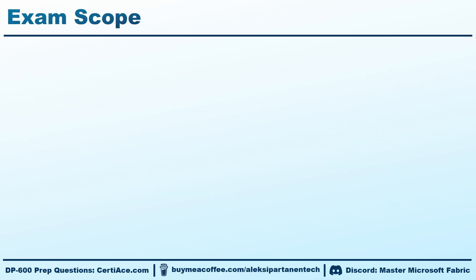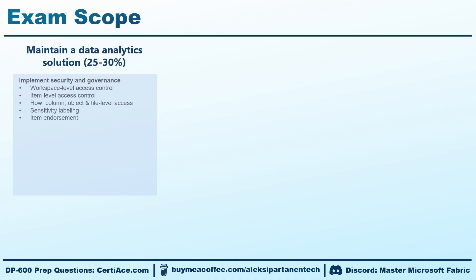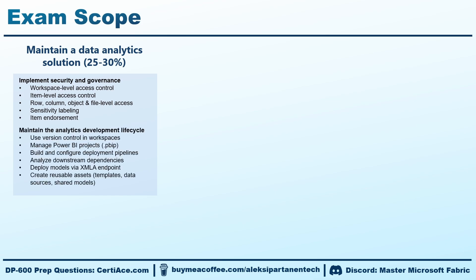Now let's cover the exam scope and what kind of skills you are expected to have. The DP600 exam is divided into three main sections. First, we have the section 'Maintain a data analytics solution', which is roughly one-fourth of the exam. In this section, you need to understand how to keep your Fabric environment secure and well managed. That includes setting up access control at different levels, using sensitivity labels, and endorsing trusted items. You also need to know how to manage the development process — that means using version control, creating Power BI projects, setting up deployment pipelines, and deploying models using the XMLA endpoint.